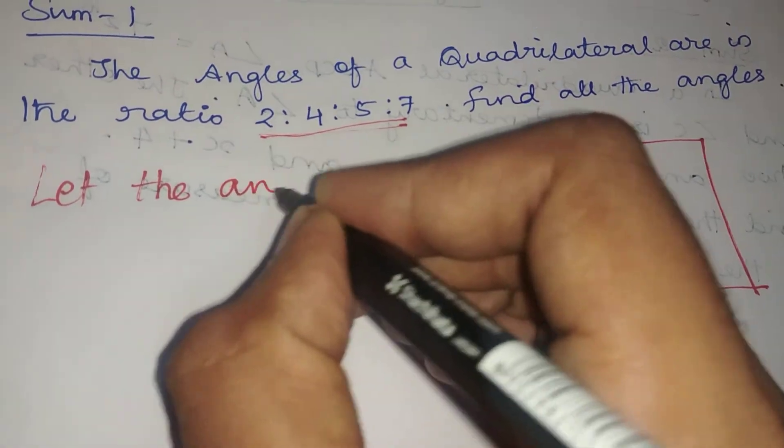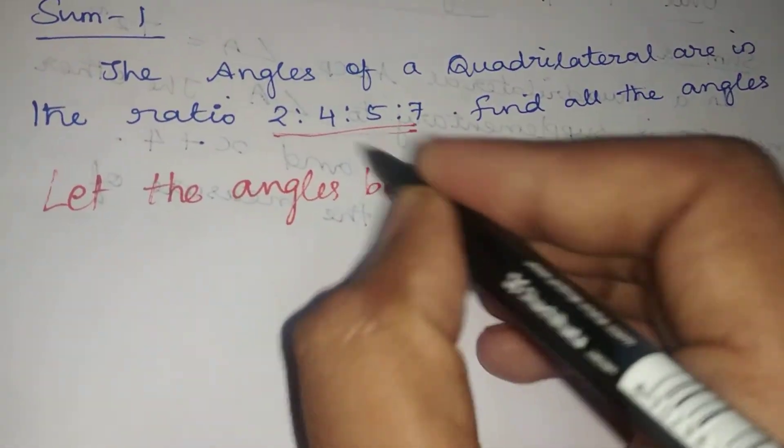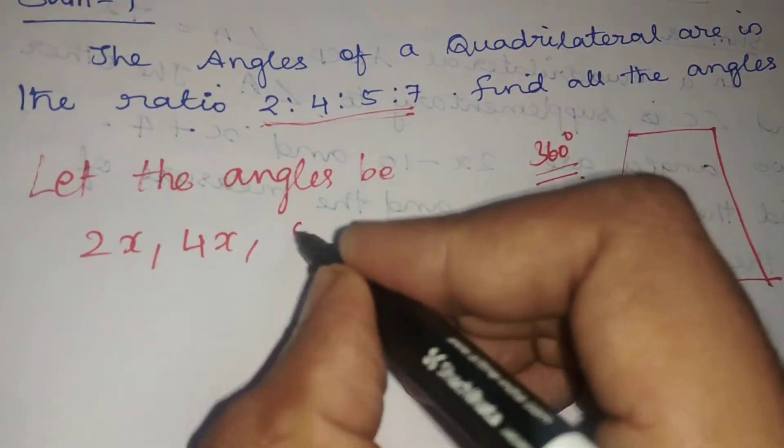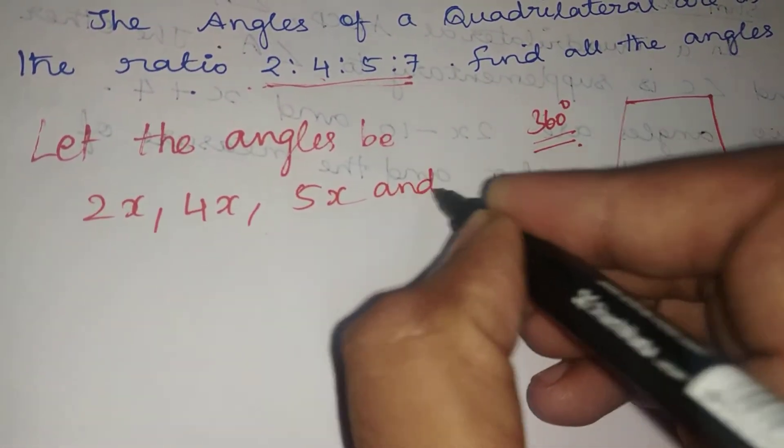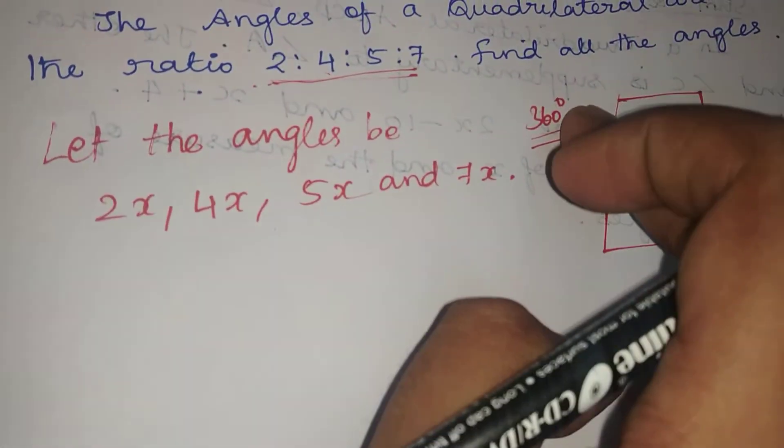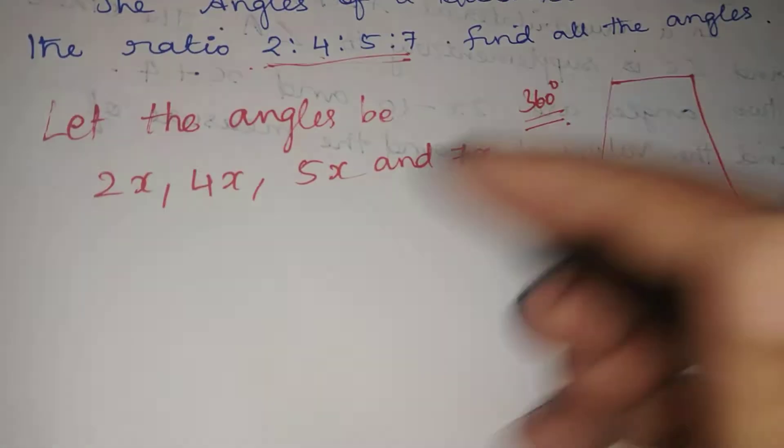Let the angles be 2X, 4X, 5X, and 7X. Now we know that the sum of angles in a quadrilateral is 360 degrees. Now we add them.